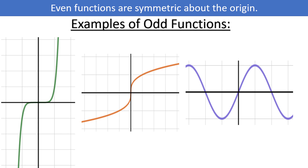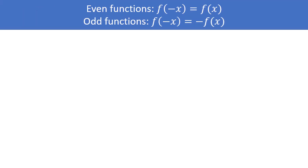Don't confuse odd and even powered polynomials with even and odd functions. Just because you have x raised to an even power does not necessarily mean you have an even function, and just because you have x raised to an odd power does not necessarily mean you have an odd function. Even and odd functions have very specific definitions: to be even, f of negative x must equal f of x, and to be odd, f of negative x must equal negative f of x.